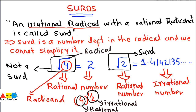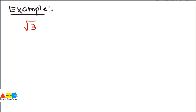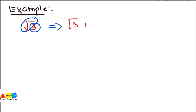Let's check how to identify whether a given number is a surd or not. Take the example of square root of 3. First, we check the radicand — which is 3. Is it rational? Yes, 3 is a rational number, so this condition is satisfied. Then we check the radical sign, its power or order. It is clear that it gives an irrational result, so it has an irrational radical. Therefore, we can say that square root of 3 is a surd.